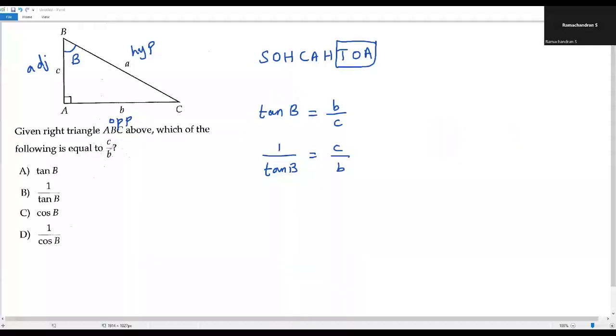My aim is to get the stuff which is equal to C over B. Already I have B over C. So to get C over B, I have to take reciprocal. When I take reciprocal on both sides, the reciprocal of tangent B is 1 over tangent B. The reciprocal of B over C is C over B. So the stuff which is equal to C over B is 1 over tangent B.